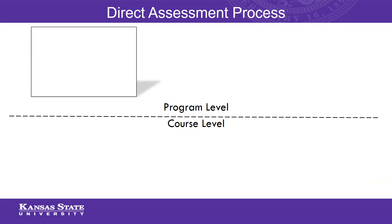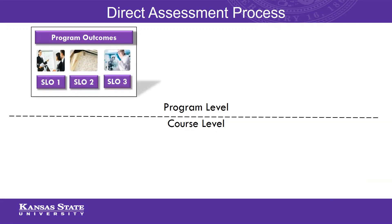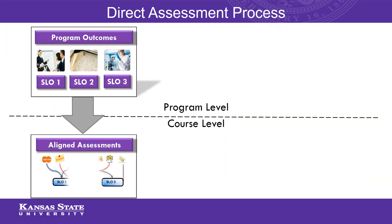At the program level, if we're able to put the outcomes at that particular level, then faculty inside of their courses can pull those outcomes into their courses themselves and align them, so that the assessments that happen within coursework can identify student achievement per program level outcomes. We'd like to show you this process within Canvas now — what it looks like and how it is put together.